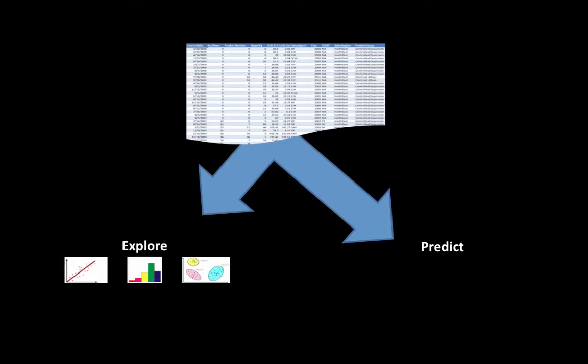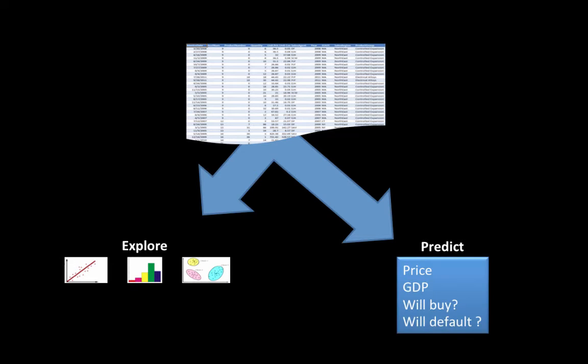So all those things are called predictive analytics. We want to predict something about the future based upon historical information that we have. We may want to predict the price, the GDP of some country, will somebody buy our product or not, will somebody default on a loan, things like that. Those are all predictive analytics that we may want to do.